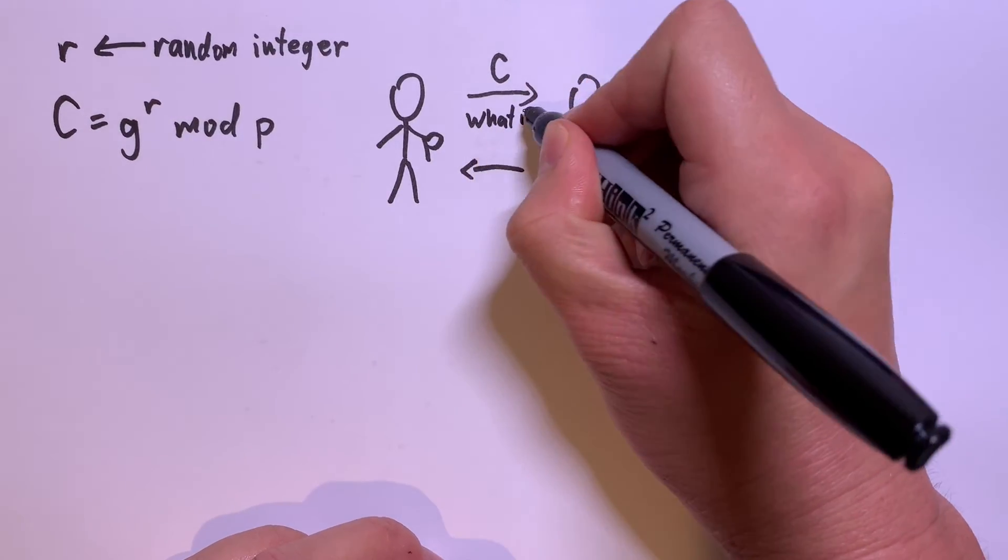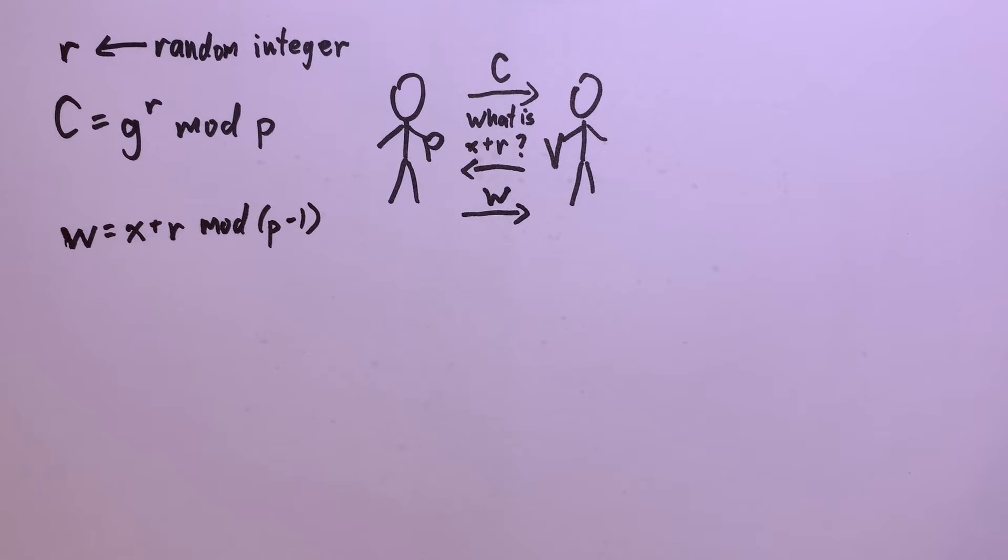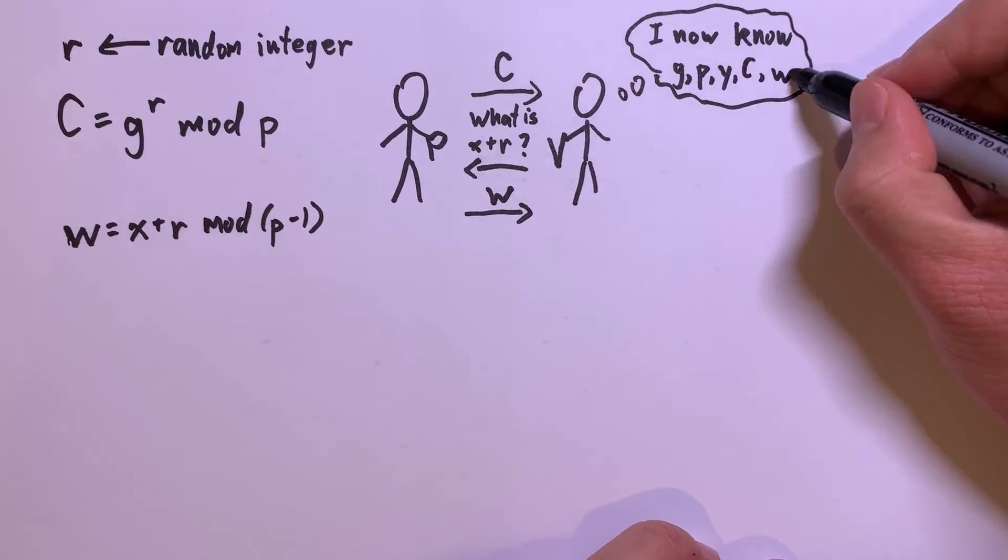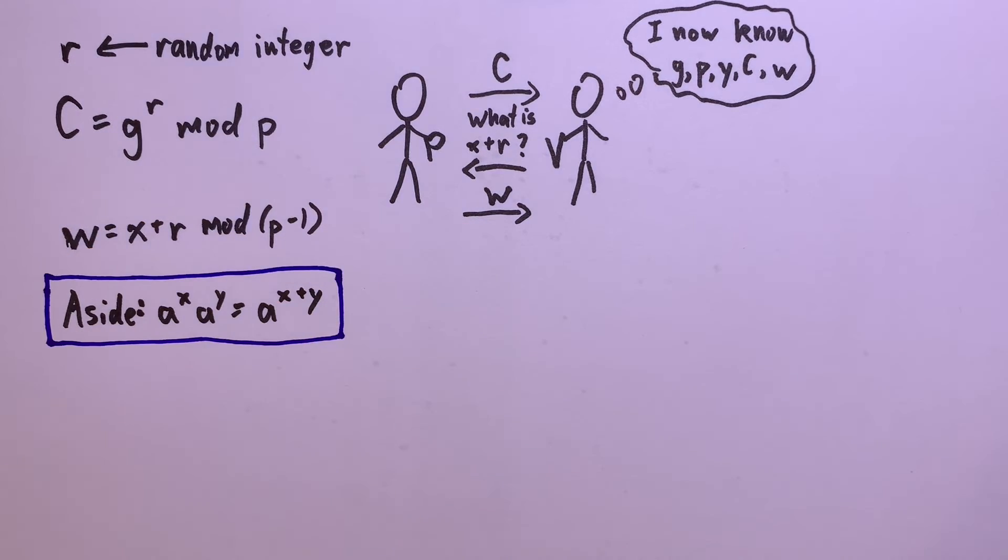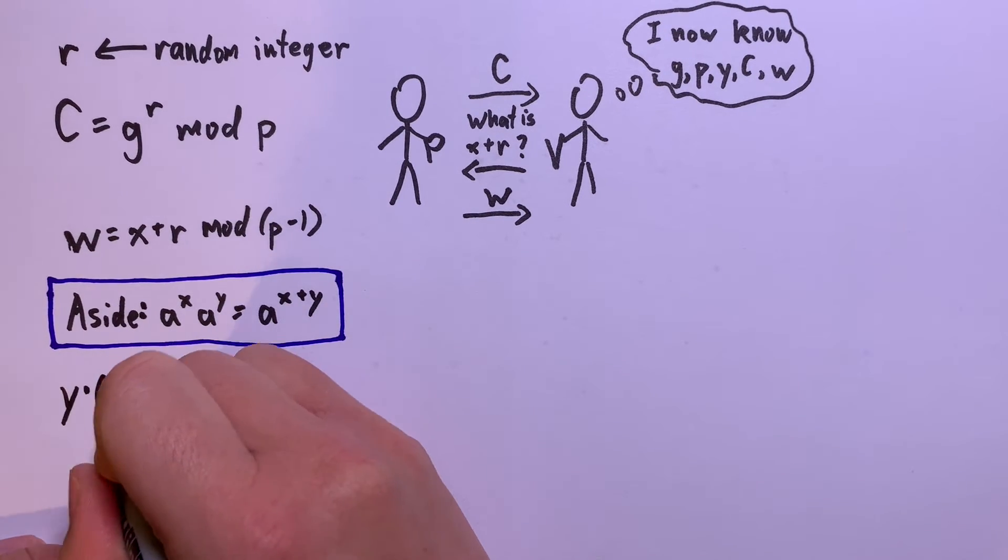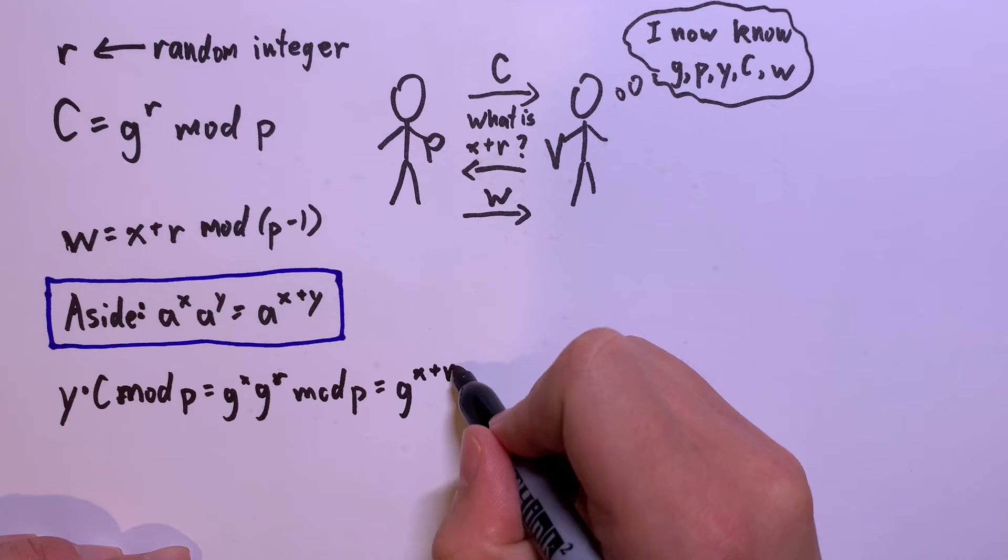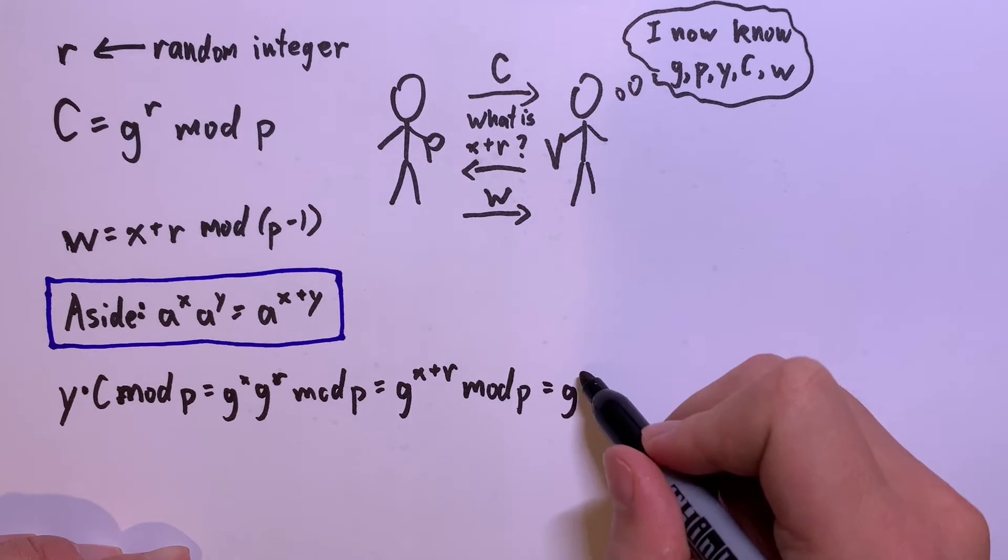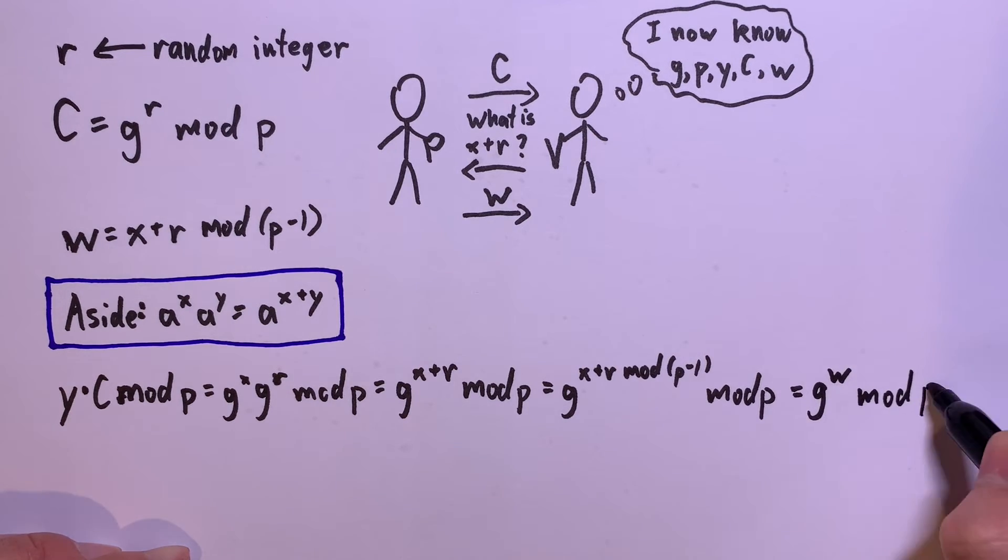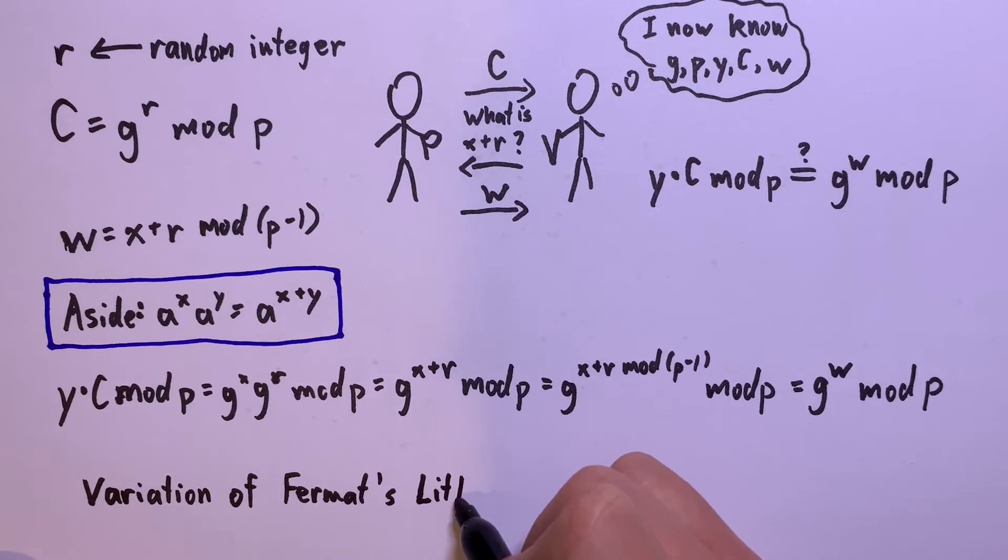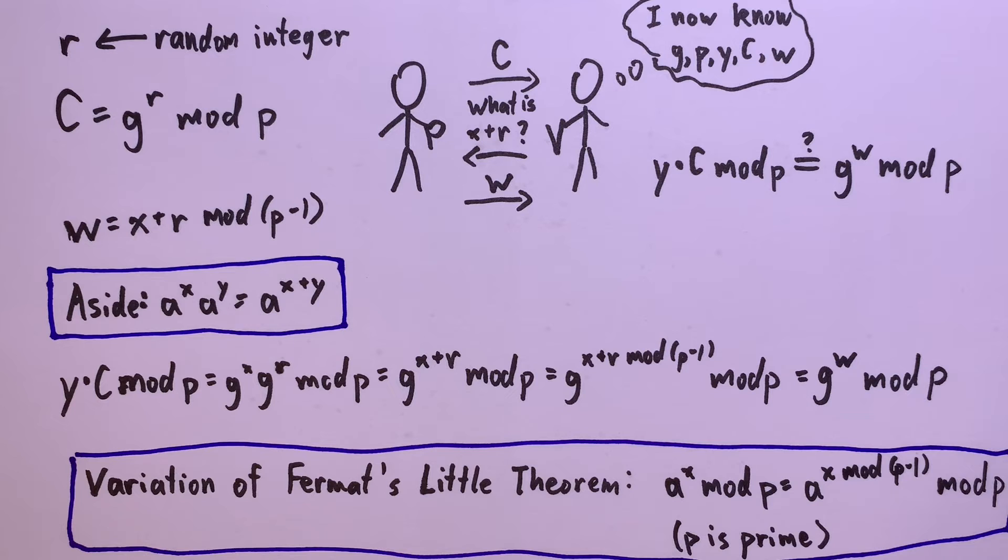Now, the verifier can ask you what w equals x plus r mod p minus 1 is. The verifier can check that you know x using c and w. As you know, when you multiply two exponentials, their exponents add. So y times c mod p equals g to the x times g to the r mod p, which is g to the x plus r mod p, which is g to the x plus r mod p minus 1 mod p, which is g to the w mod p. That last part works because when you have an exponential mod p, you can apply mod p minus 1 to the exponent.